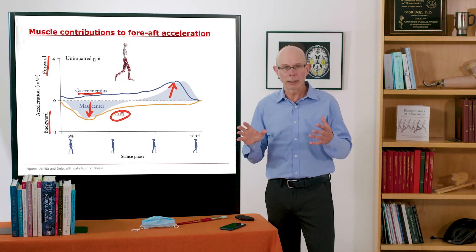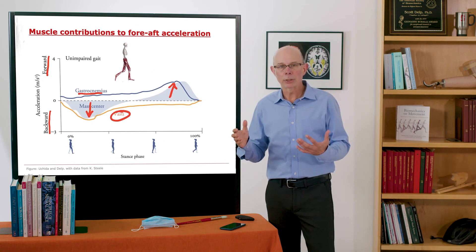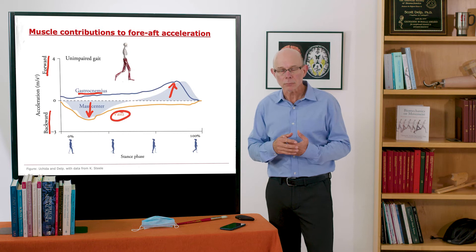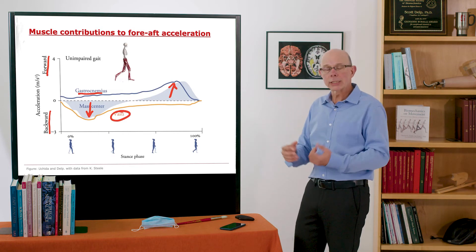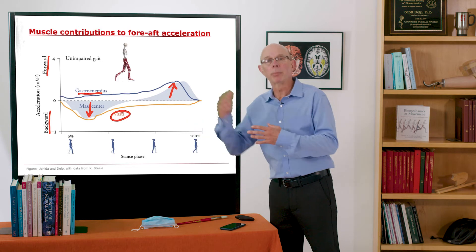So you see in typical gait, without any impairments, these two muscles are working with each other. One's on first, it shuts down, then the other one comes on and propels you forward.